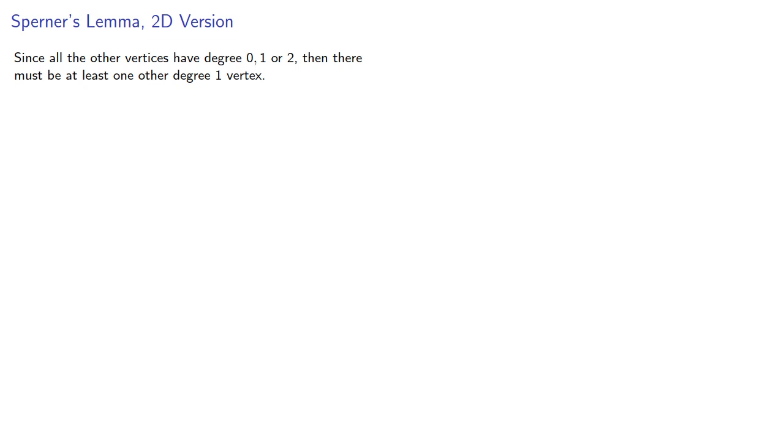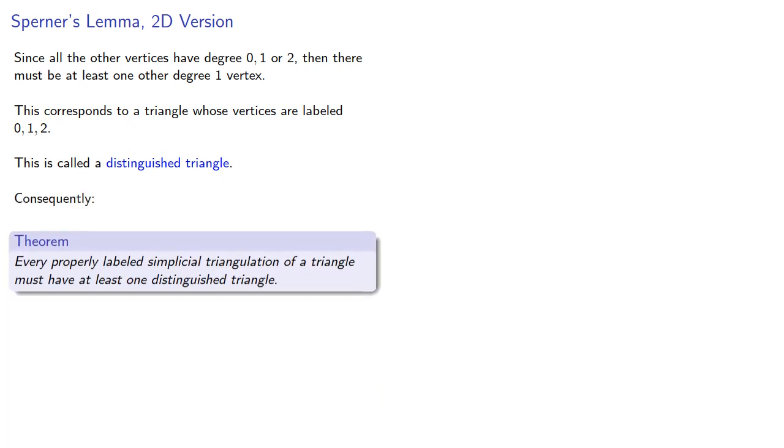This corresponds to a triangle whose vertices are labeled 0, 1, and 2. This is called a distinguished triangle. Consequently, every properly labeled simplicial triangulation of a triangle must have at least one distinguished triangle.